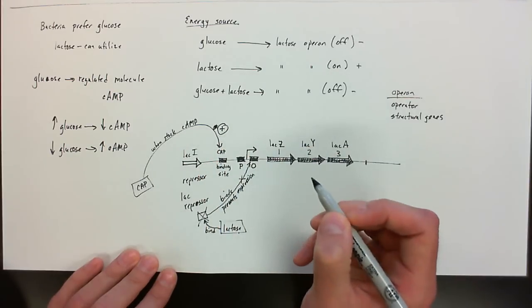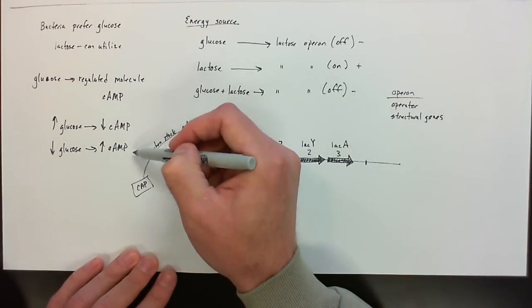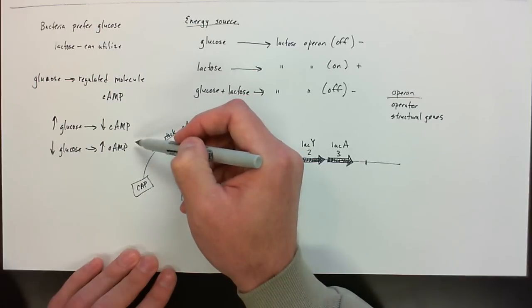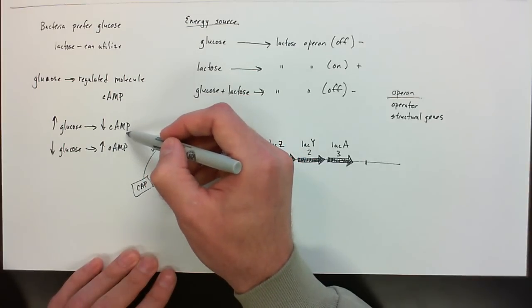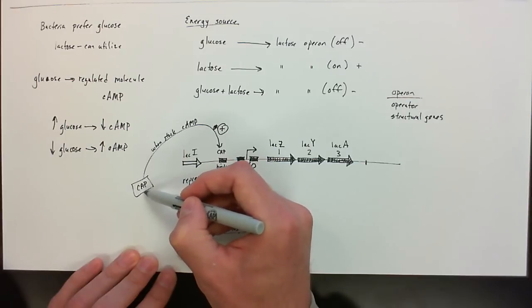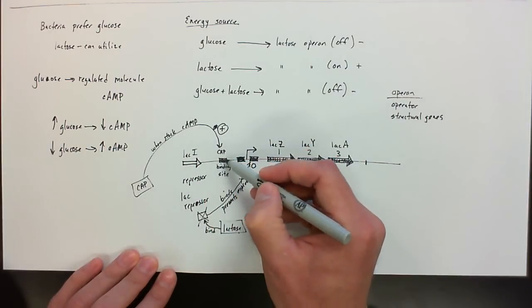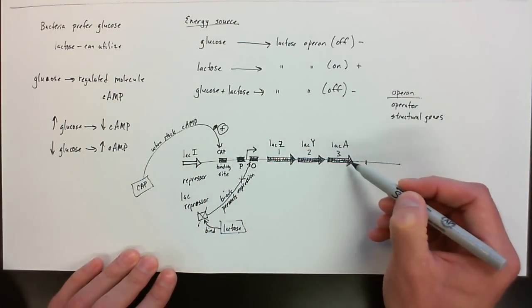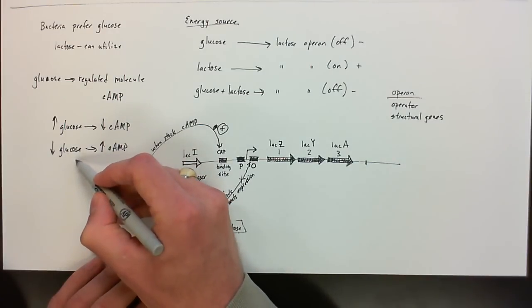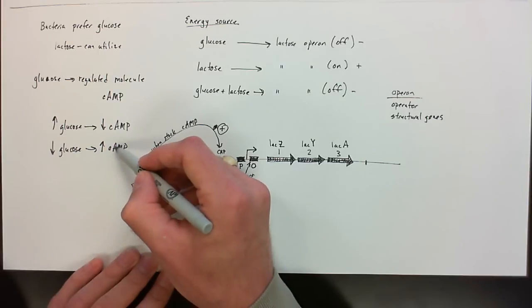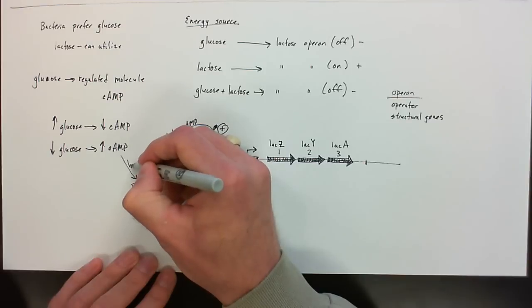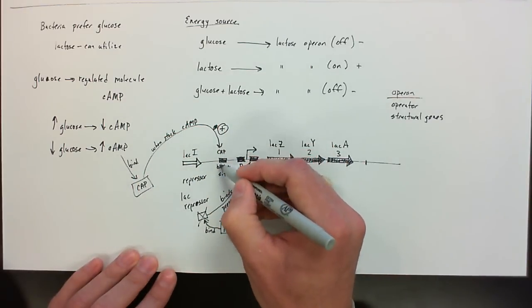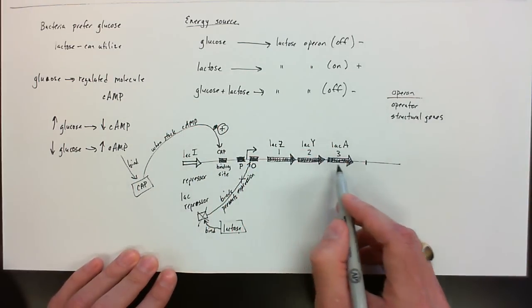So that's where we go back over to our glucose here and cyclic AMP. So when glucose level is high, the cyclic AMP level is low. So that means the CAP is not being bound with cyclic AMP. Therefore, it is not binding to the CAP binding site, and therefore we cannot transcribe this. When the glucose level is low, the cyclic AMP level is high. Therefore, cyclic AMP is binding to the CAP, which means it's going to bind to the CAP binding site and activate it.